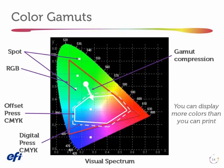Looking at spot colors, you can see they're going to have the same problem — they're well out of gamut of the conventional or even the digital press. So we're also going to experience gamut compression of spot colors, which means your customer is going to be disappointed if they use a very bright Pantone color that looked great on their screen and you convert it to CMYK when you print it on your digital or conventional press.